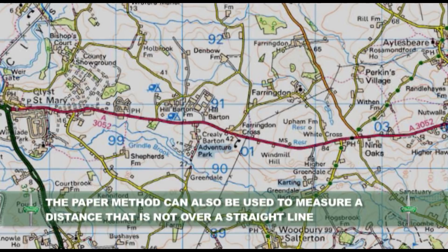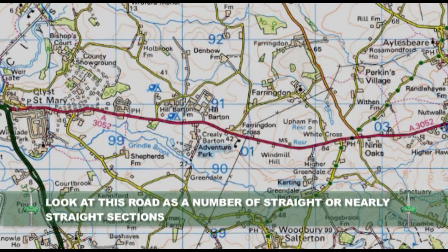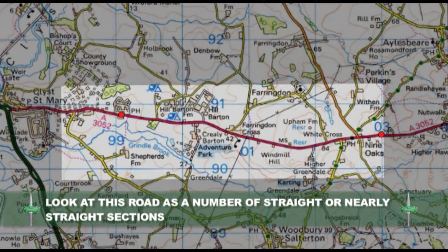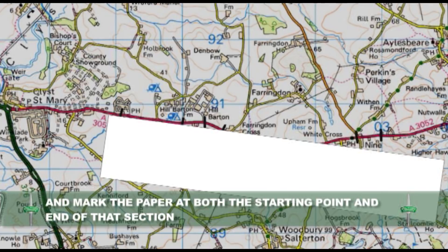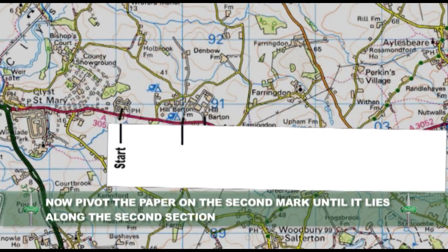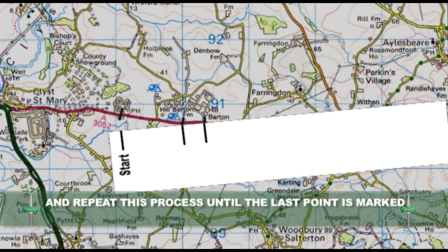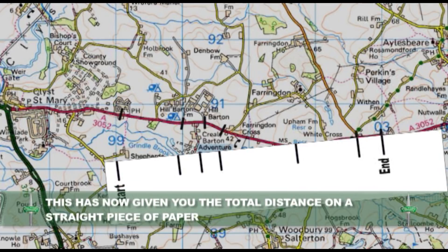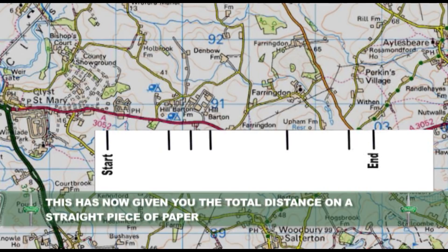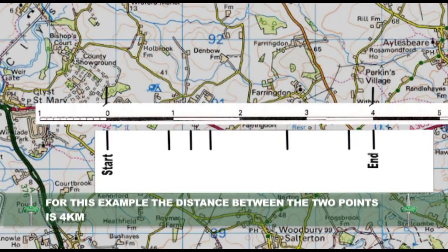The paper method can also be used to measure a distance which is not over a straight line, for example along a road or river. To do this, consider for example this road as a number of straight or nearly straight sections. Lay the piece of paper along the first section, and mark the paper at both the starting point and end of the first section. Now pivot the paper around this second mark until it lies along the second section. Mark the end of the second section, and repeat this process until the last point is marked. This gives you the total distance recorded on a straight piece of paper, which can be read off against the scale bar on the map. For this example, the distance between the two points is 4km.